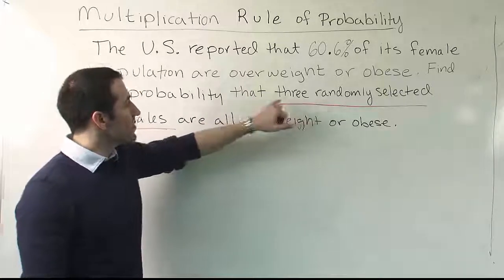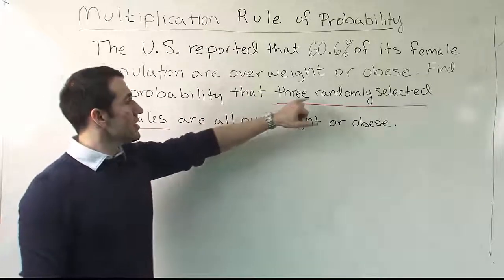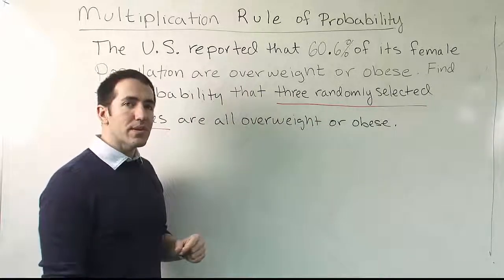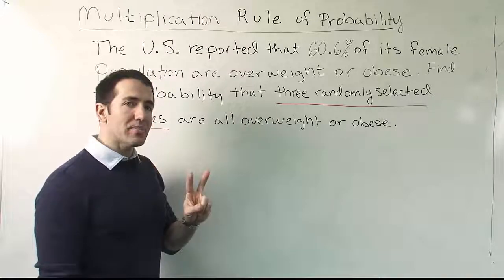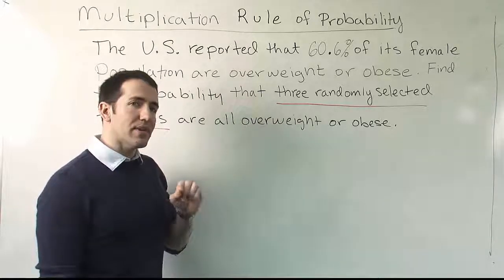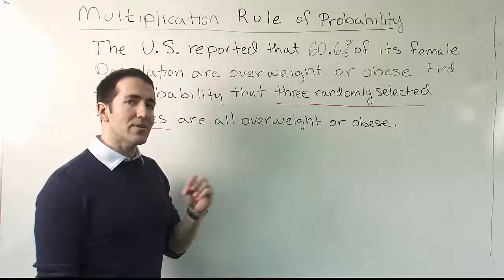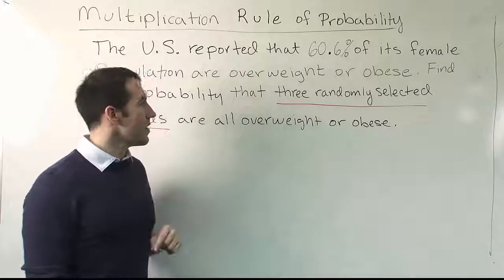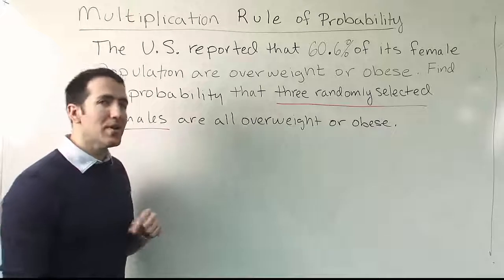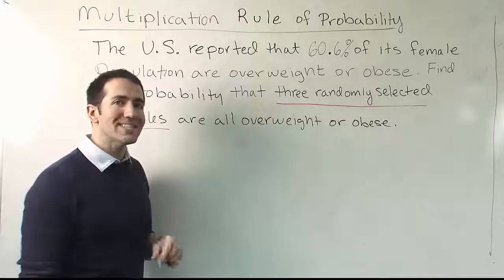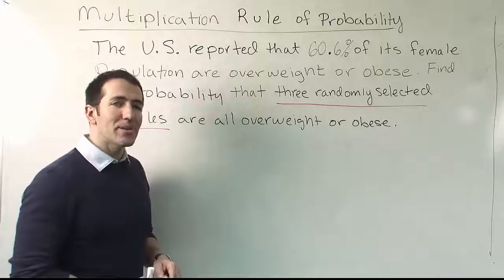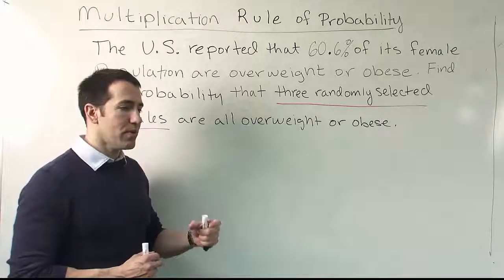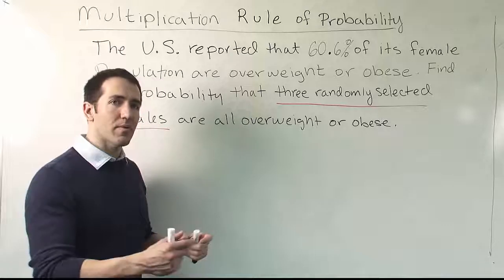Once you've identified this as a multiplication rule scenario, we have to decide between two possibilities: whether the events are independent or dependent. Independent events are events that do not affect one another — the outcome of one does not affect the outcome of the other.